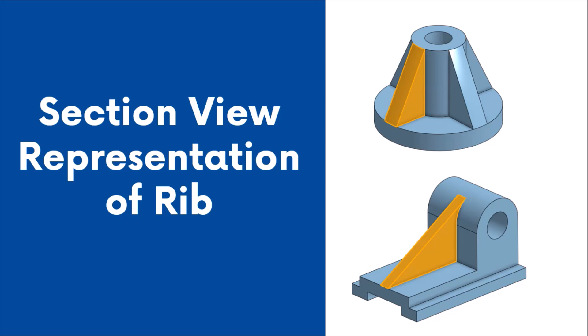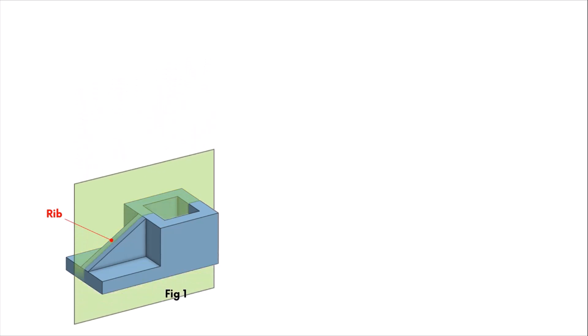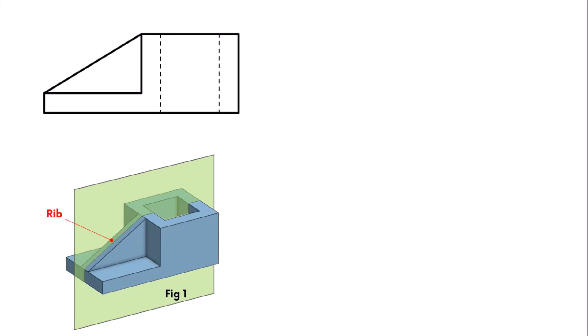Let's demonstrate this with the help of an example. A part containing a rib feature is shown here. The thickness of the rib is quite less compared to the thickness of the part. A vertical cutting plane cuts the object across the axis of symmetry. Our task is to draw the full section front view of the part by applying the special sectioning convention to the rib portion.